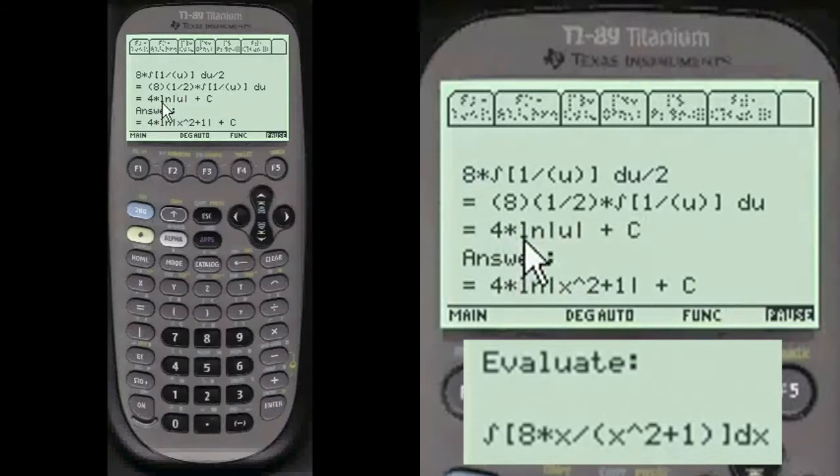And then we have 4 times log of u. Anything 1 over u is log of u plus C. And the answer is after we substitute the u back in, 4 times log of x squared plus 1 plus C.